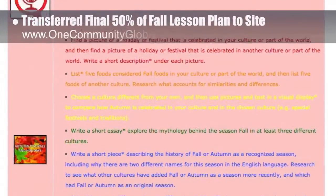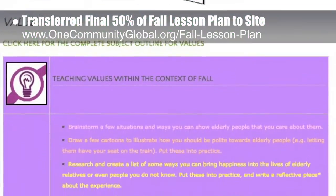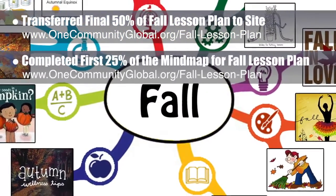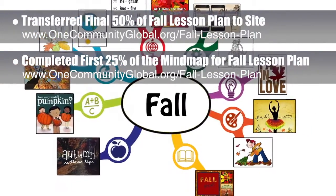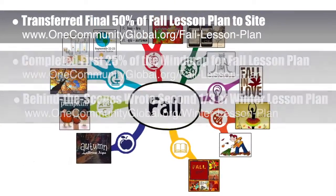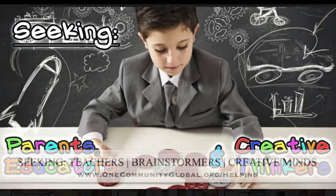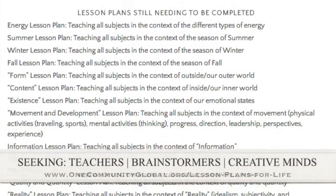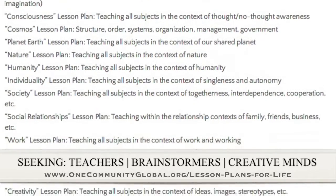transferred the final 50% of the written content for the fall lesson plan to the website. This lesson plan is purposed to teach all subjects to all learning levels in any learning environment using the central theme of fall. We additionally completed and added the first 25% of the mind map for the fall lesson plan and fall subject theme icons to the webpage. Behind the scenes, we also wrote the second third of the winter lesson plan, bringing the behind-the-scenes written part of that to about 65% complete. If you'd like to help, we are seeking people to finish these lesson plans for our open source and free shared education program for all ages and all educational levels.